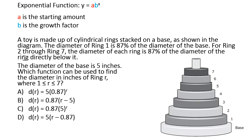Let's look at our second example. Go ahead and read it. Pause the video and press play when you're ready to go over it together. Again, since this problem is inside of our exponential functions video, we know we're going to be using a function like this. And we know we're going to be looking for a starting amount and a growth factor. A toy is made up of cylindrical rings stacked on a base, as shown in the diagram. The diameter of ring 1 is 87% of the diameter of the base. For ring 2 through ring 7, the diameter of each is 87% of the diameter of the ring directly below it. The diameter of the base is 5 inches.